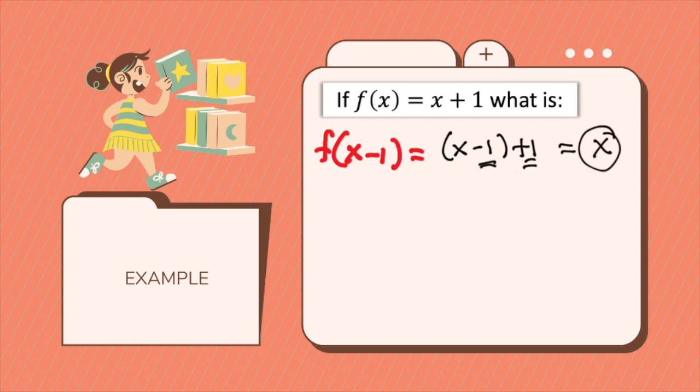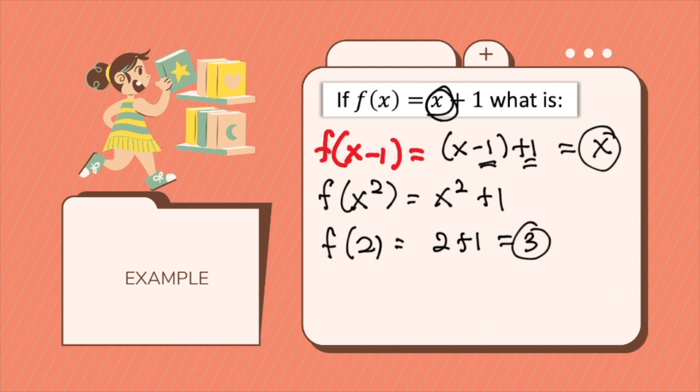So if you have f and then this is x squared, you just need to substitute your x here with x squared plus 1. And so on and so forth. So if you have a 2, you just need to substitute x with 2 plus 1. That will be an output of 3.